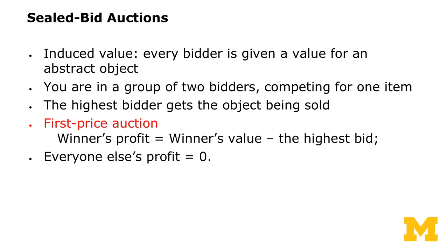This is an example of the induced value method, because every bidder is given a value for the abstract object. You're in a group of two bidders competing for one item — really the simplest environment we can come up with. The highest bidder gets the object being sold, and in a first-price auction, the winner's profit is the winner's value minus the highest bid. The loser's profit is zero.